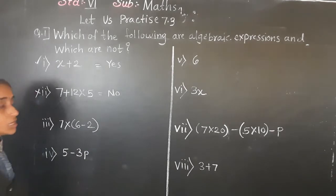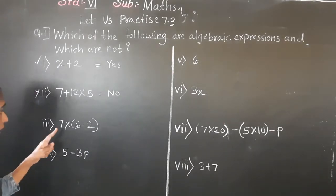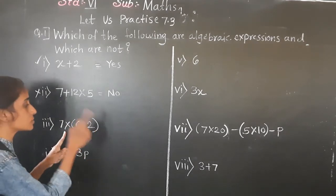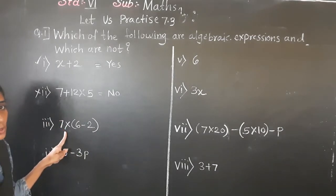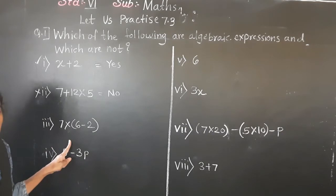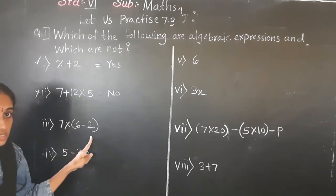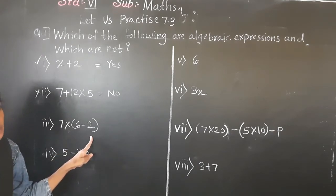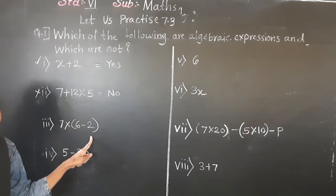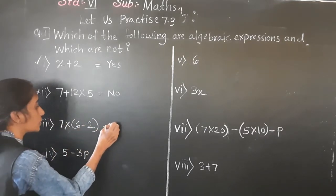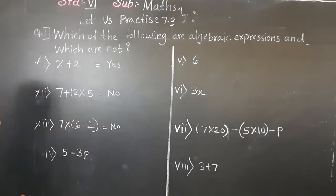In the third example, 7 multiplied by (6 minus 2): basic operations are given, constants are given, but no variable is given. An algebraic expression requires a combination of variable and constant. So this is also not an algebraic expression.